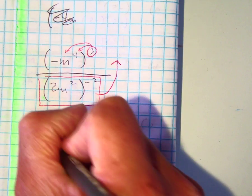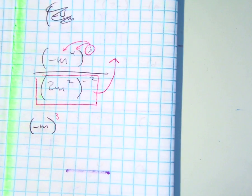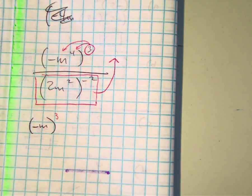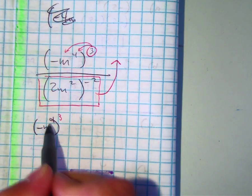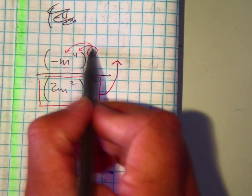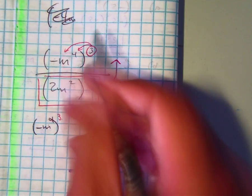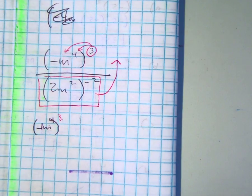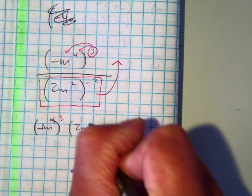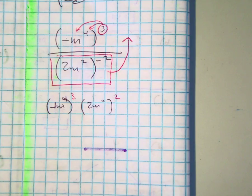I have negative m to the third power. Negative m to the fourth power to the third power. You could distribute that three to the negative one. Negative one to the third power is appropriate, but there's a negative one already there. Does that make sense? And then this one, I have 2m to the second power, but now it's in the numerator and it's a positive two.